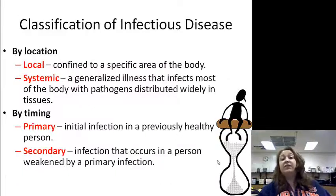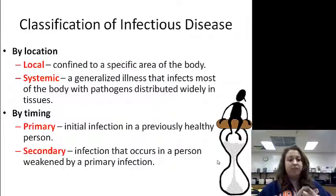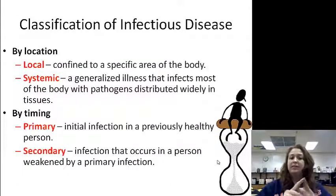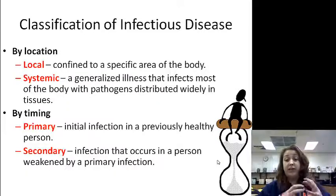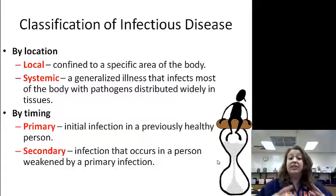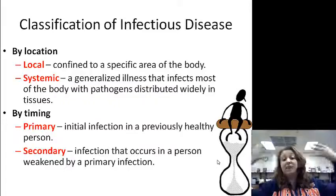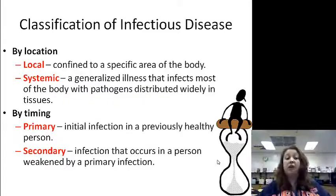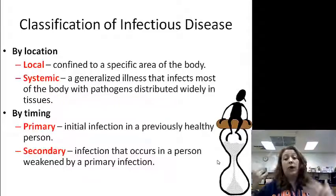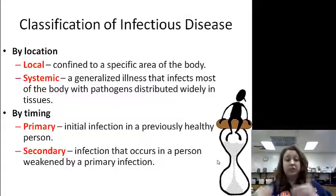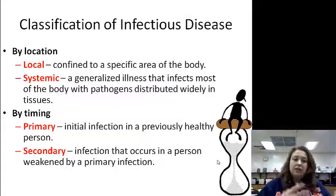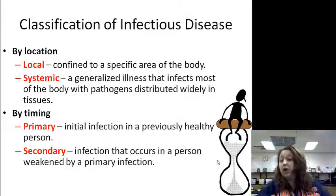Classification of infectious disease by location: it can be local, which is confined to a specific area, or it could be systemic, which is a generalized illness that infects most of the body with pathogens distributed widely throughout the whole tissue. Local means confined; systemic means all over.